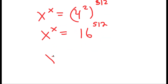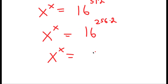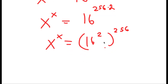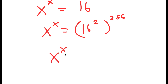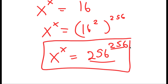Now I'm going to do it one last time. 512 is the same thing as 256 times 2, so I can write this as 16 to the power of 2 to the power of 256. And since 16 to the power of 2 is 256, I get 256 to the power of 256 equals x to the power of x. Because both the base and the exponent are the same, x equals 256 is the answer.